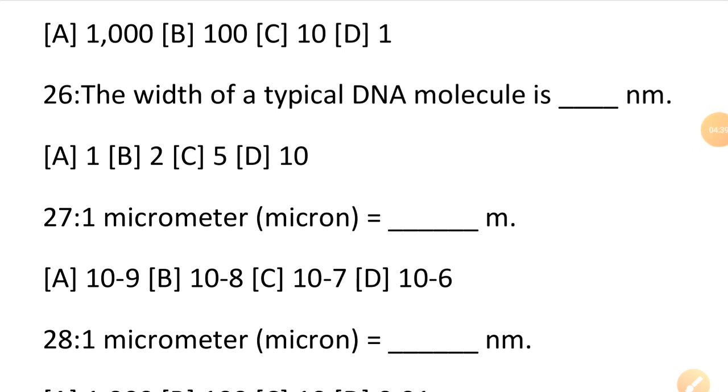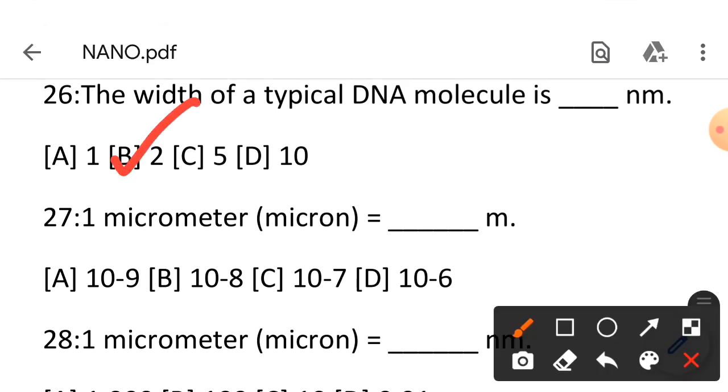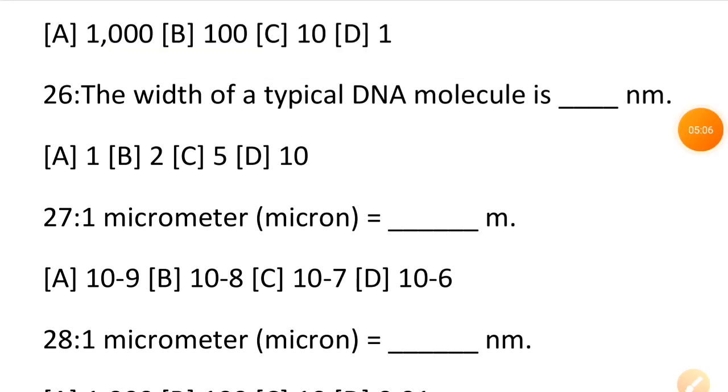Next is the width of a typical DNA molecule. Its width is actually 2.5 nanometer, but that is not in the options. So the nearby close answer is 2 nanometer. We will choose option B, 2 nanometer. But the actual size is 2.5 nanometer. If the option is 2.5, then choose 2.5.